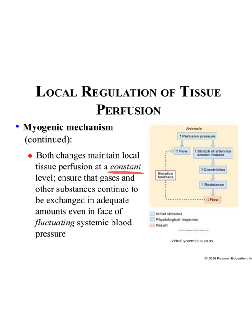Both mechanisms maintain local perfusion at a constant level. If activity is constant, you need to highly regulate blood flow to ensure the organ continues to have oxygen and nutrients even as systemic blood pressure changes. If perfusion pressure increases, more blood flow will stretch the smooth muscle of those vessels, causing constriction — because you don't want too much blood flowing through. Constriction increases resistance, which decreases flow. This is a negative feedback system that highly regulates a very local area.